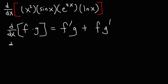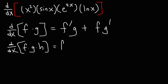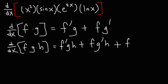So what about if we have three terms? If we want to find the derivative of f times g times h, we take the derivative of the first part, f prime, leaving the other two parts the same. Next, we take the derivative of the second part, leaving the first and third parts the same. And then finally, we take the derivative of the last part.